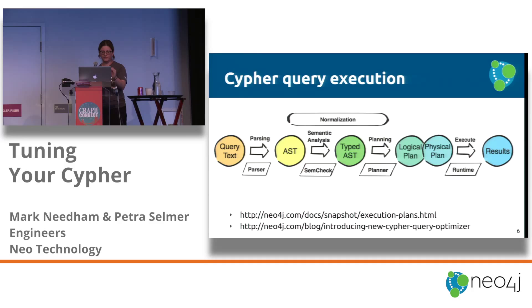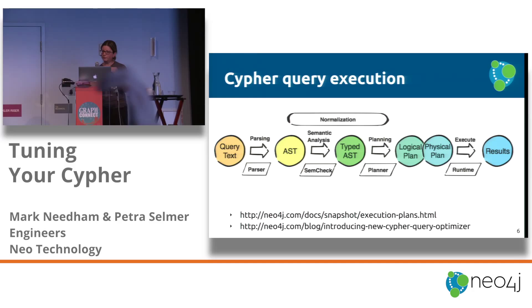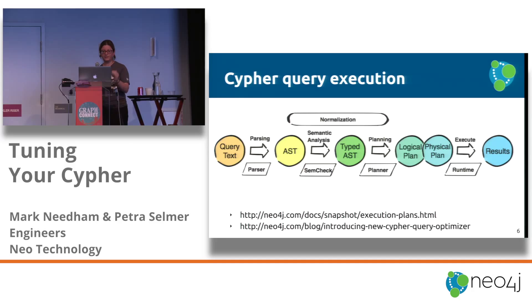This is actually how Cypher executes queries. What happens is the query is executed in the following steps. We first take your input query, tokenize it, and build an abstract syntax tree. Using this abstract syntax tree, we do semantic checking — basic error checking such as ensuring you're not dividing a string by another string. Assuming that's all right, we then optimize and normalize the abstract syntax tree. We do things like moving all labels and types from the match clause into the where clause, and converting equality statements like 'name = x' into an IN operator to normalize them.